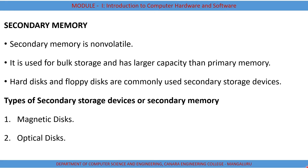Secondary memory is a bulk storage device and has a lot more capacity compared to primary memory. It is not directly accessible by the CPU. Usually, programs or instructions which are not currently being used by the CPU are stored in secondary storage.